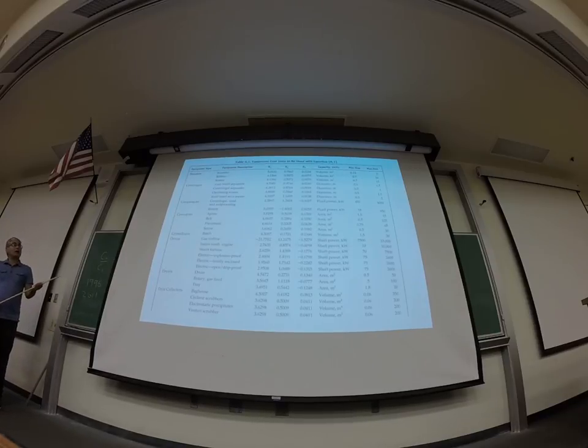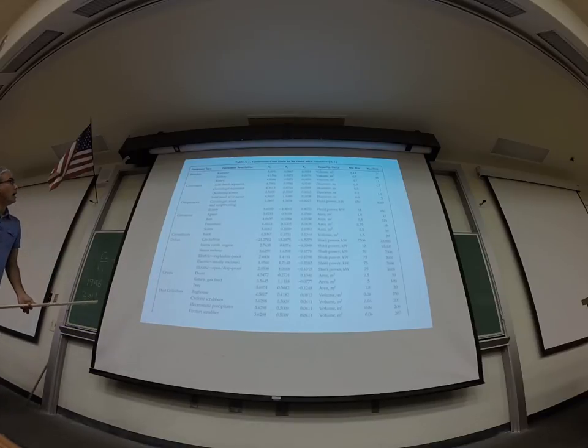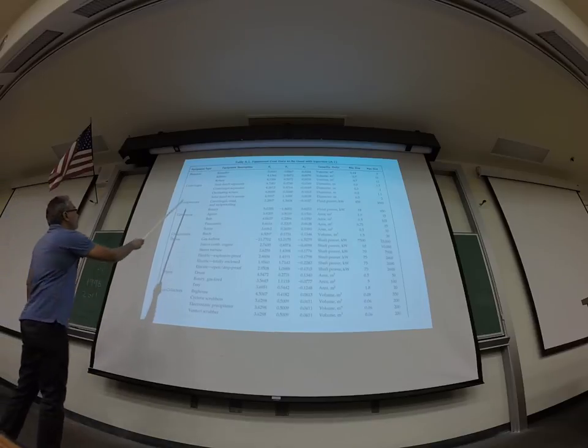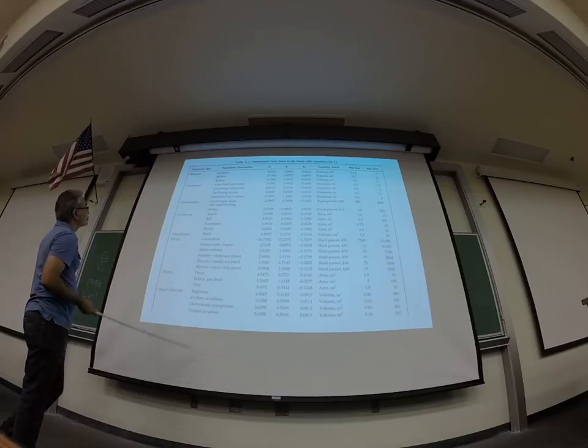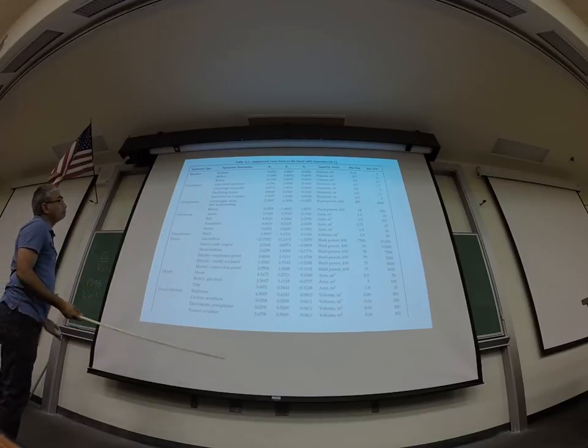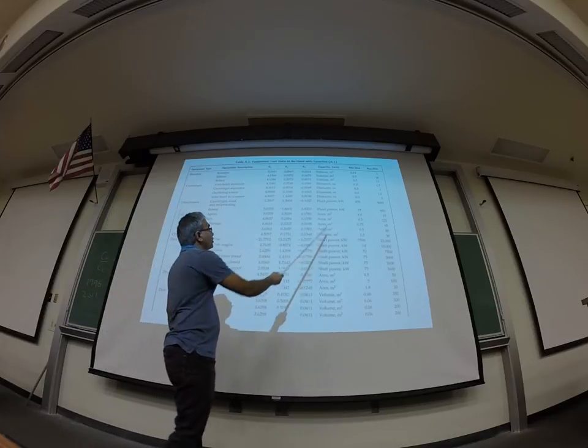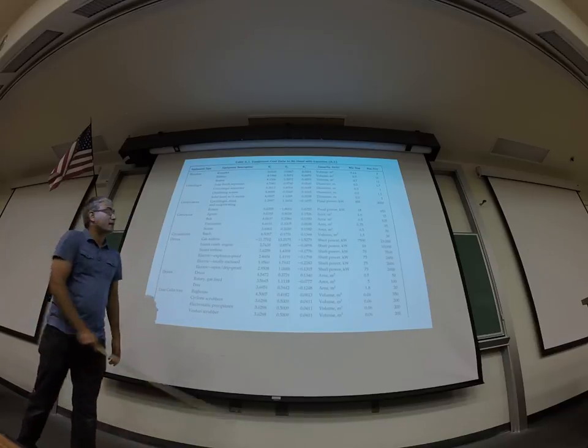These are some of the tables. I kind of copied the tables. There's really not much for me to say, except you have different equipment type. Within this equipment type, there are different options. And then you have k1, k2, k3 for those. And then, of course, you have to make sure that you use the correct units. You have to use the capacity in the correct units.